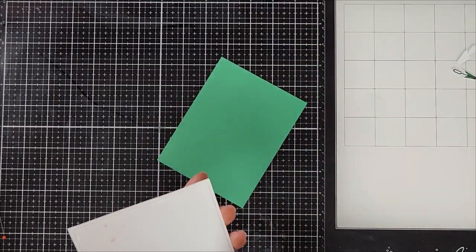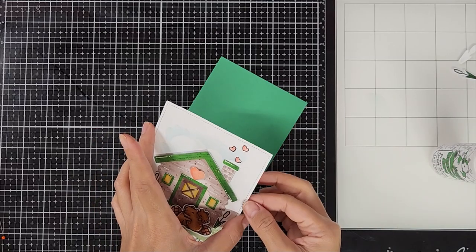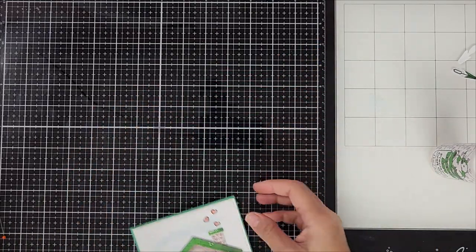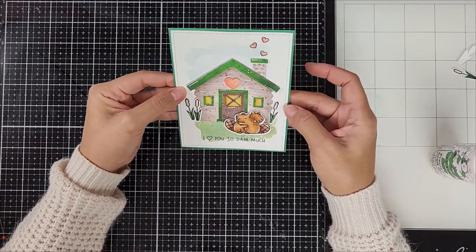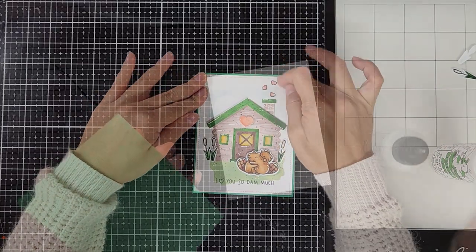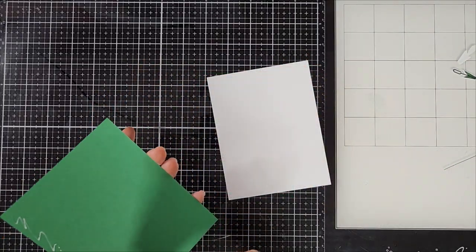Okay, so off screen I went ahead and trimmed down a green colored card stock just slightly larger than the card panel, and I went ahead and adhered the two together with liquid adhesive. And finally I adhered that onto a top folding card base.